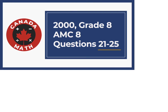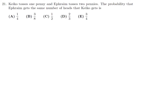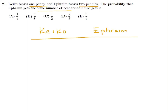Questions 21 through 25 of the 2000 Grade 8 AMC 8. Kiko tosses one penny and Ephraim tosses two pennies. The probability that Ephraim gets the same number of heads as Kiko is what? Let's make a little table here. Kiko is on one side and Ephraim is on the other, and each of them are going to be tossing pennies. Kiko only tosses one penny and Ephraim tosses two pennies.